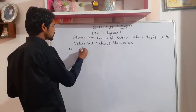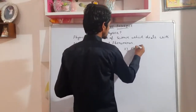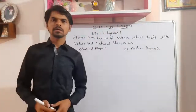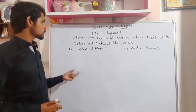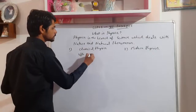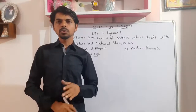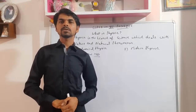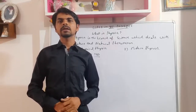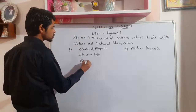Physics is of two types: first is classical physics and second is modern physics. Classical physics covers the physics discovered up to the year 1900. It means whatever physics was discovered up to 1900 is called classical physics. Classical physics was based on macroscopic phenomena.